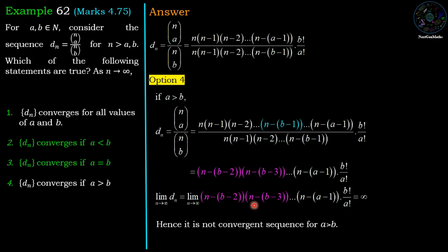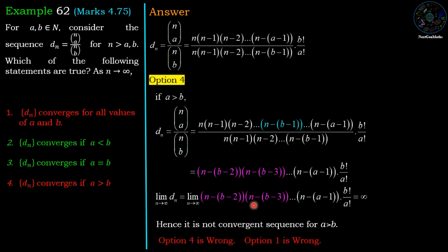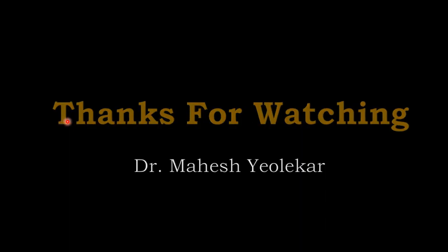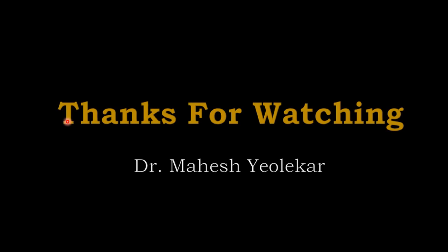So option four is wrong. Option one is also wrong because it claims convergence for all values of a and b, but dn is not convergent when a is greater than b. Therefore options two and three are the correct answers. Thanks for watching.